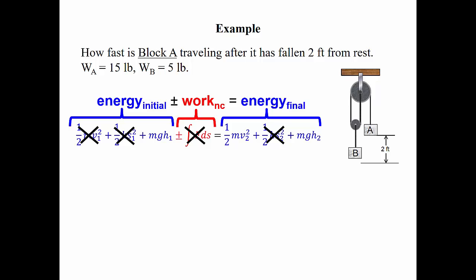Also, there are no springs in this system, so we can eliminate the spring terms from both sides of the equation. We also note that this system starts from rest, so there's no initial velocity. Rewriting the equation with the remaining terms and representing each mass, we end up with: mass times gravity times the initial height of A, plus mass times gravity times the initial height of B, equals mass times gravity times the final height of A, plus mass times gravity times the final height of B, plus one-half the mass times the final velocity of A squared, plus one-half the mass times the final velocity of B squared.